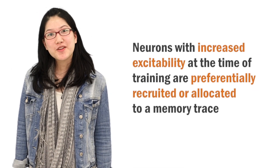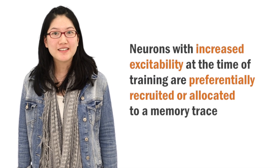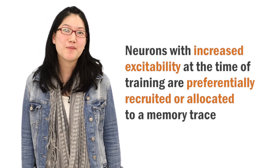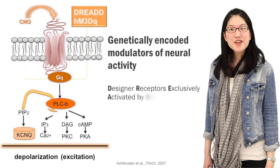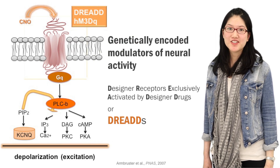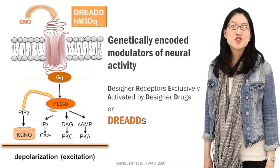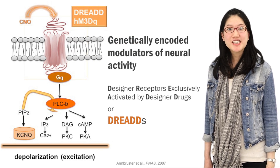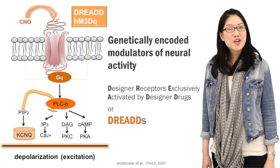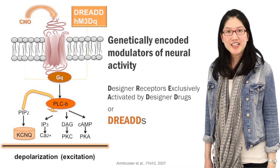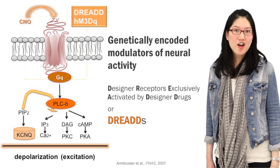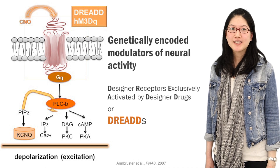We next assessed whether neurons with increased excitability at the time of training are preferentially recruited or allocated to a memory trace. As a second way to increase excitability, we turned to genetically encoded modulators of neuroexcitability — specifically DREADDs, or designer receptors exclusively activated by designer drugs. We used HM3D constructs developed by Brian Roth's lab.